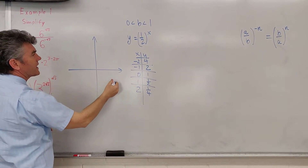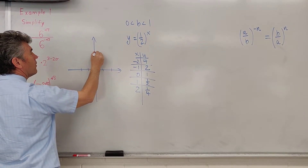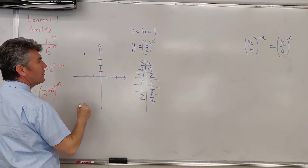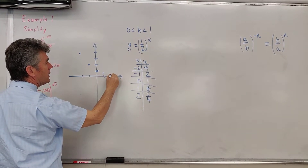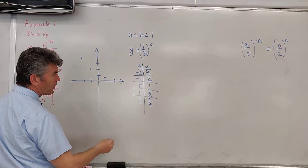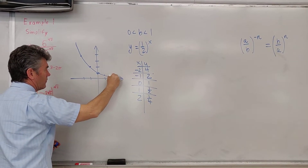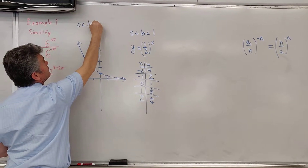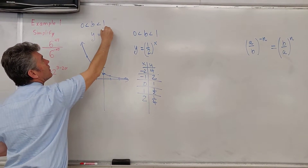So here we go. We draw the y-axis and the x-axis. On the x, we'll go two to the left and to the right. On the y, we're going to go four up. So we have the points: negative two and four, negative one and two, zero and one, one and one-half, and two and one-fourth. It doesn't matter what power I raise one-half to — one-half to any power will always be greater than zero. If b is between zero and one, the graph of y equals b to the x looks like this.